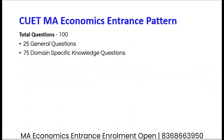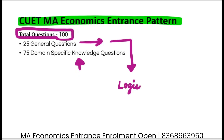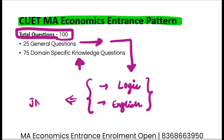Overall, the CUET entrance exam is going to have 100 questions: 25 general questions and 75 domain-specific questions. For the general questions section, you should practice logic and some English - paragraph reading and analyzing paragraphs. For preparation, you can easily refer to the past year papers of JNU.